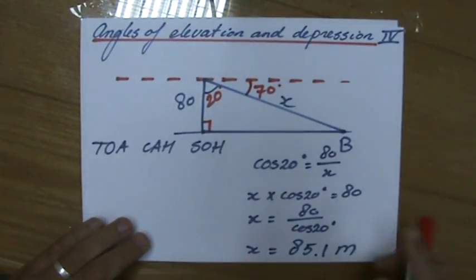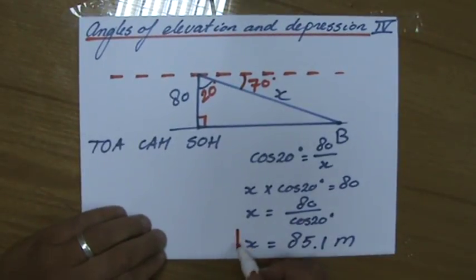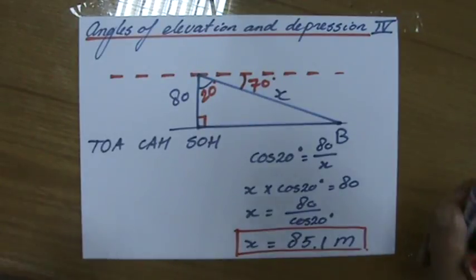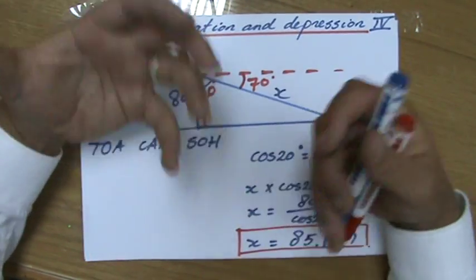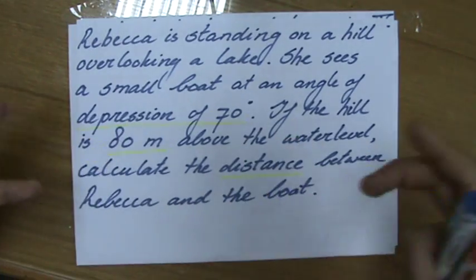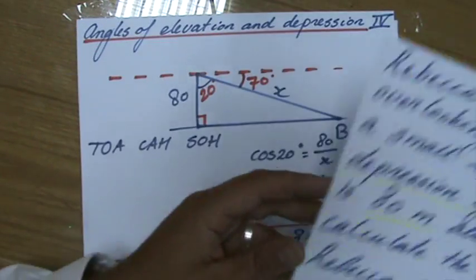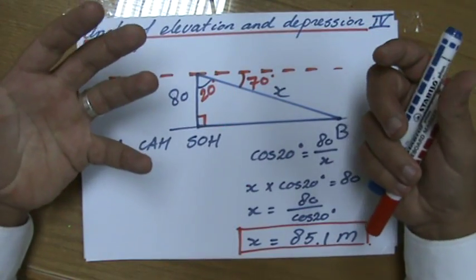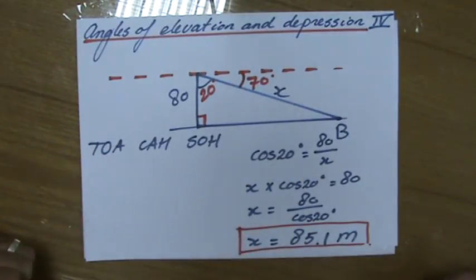I was expecting an answer bigger than 80 because the hypotenuse is always the longest side of the triangle. With angles of elevation and depression you have to first identify the important information, then translate that into a picture. You're looking for a right-angled triangle to do some trigonometry. Choose the correct ratio and work it out.